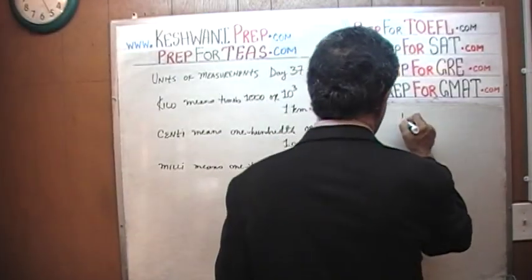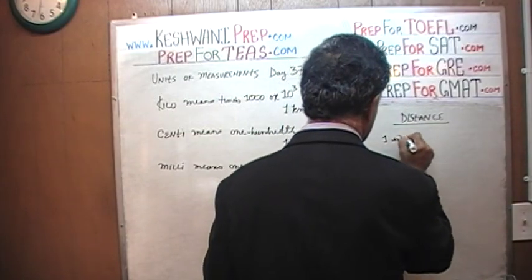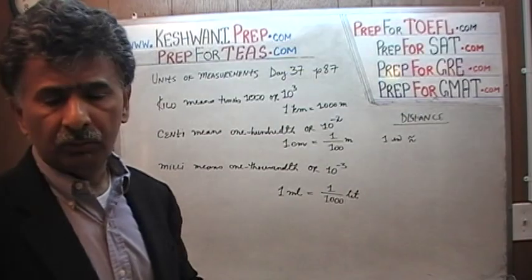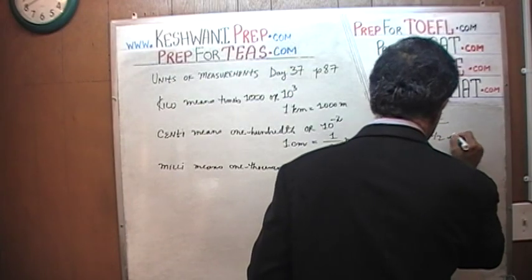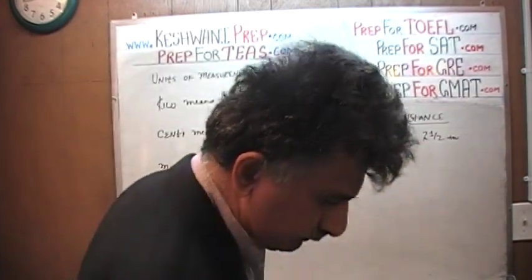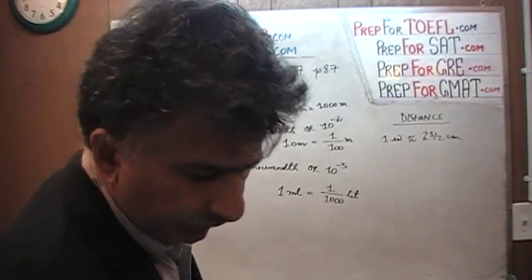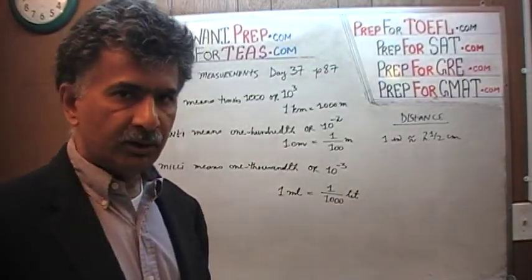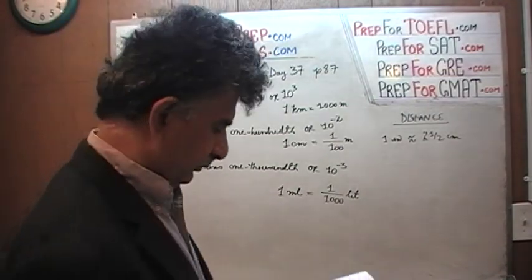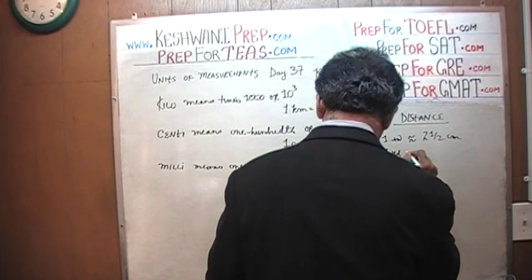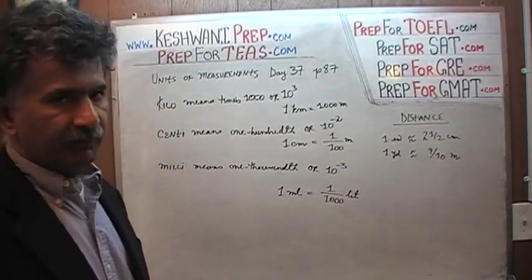Let's start with distance. One inch is approximately two and a half centimeters. An inch is much longer than a centimeter — two and a half times a centimeter. Two and a half centimeters approximately make one inch. Similarly, one yard is about nine tenths of a meter. One yard is nine tenths of a meter.